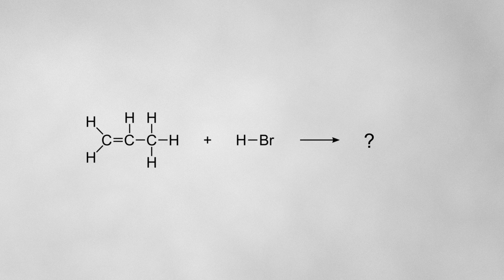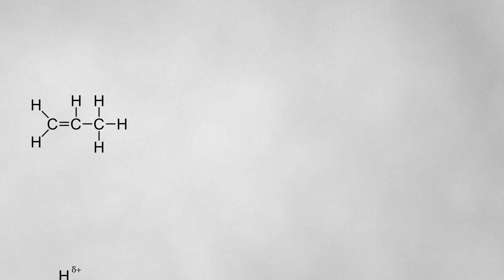Let's take a look at a more complicated example, with the reaction between propene and hydrogen bromide. Hydrogen bromide has a permanent dipole because bromine is more electronegative than hydrogen, so the hydrogen is always delta plus and the bromine is always delta minus. This means the hydrogen atom acts as the electrophile. As the HBr molecule approaches the double bond, the electrons from the pi bond in the carbon-carbon double bond will be attracted towards the delta plus hydrogen atom. This causes the electrons in the hydrogen-bromine bond to be repelled all the way onto the bromine atom to leave a bromide ion.